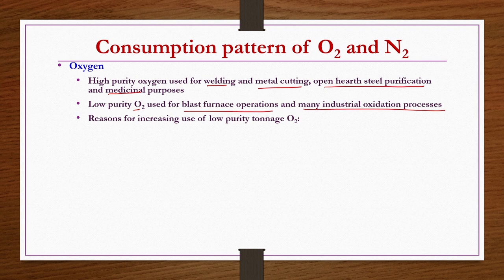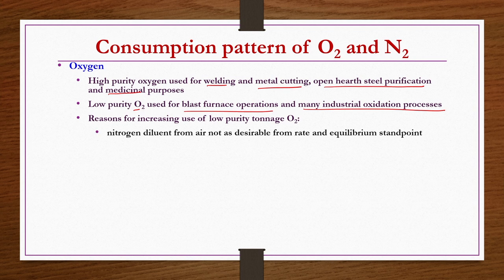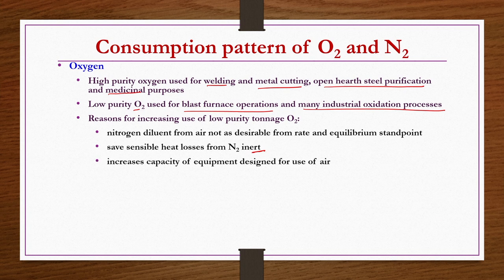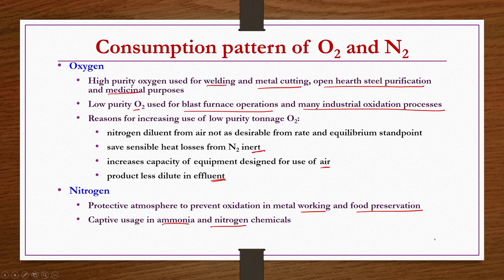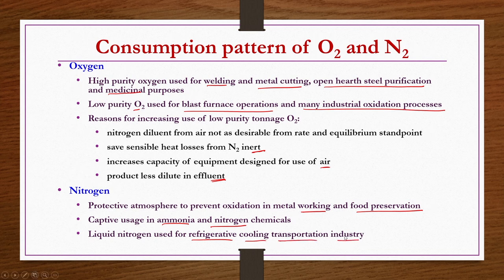Low purity oxygen also saves sensible heat losses from inerts, increases capacity of equipment designed for use of air, and produces less dilute product in effluent. For nitrogen: it is used as a protective atmosphere to prevent oxidation in metal working and food preservation. Captive usage is in ammonia and nitrogen chemicals production. Liquid nitrogen is used for refrigerated cooling and transportation industry.